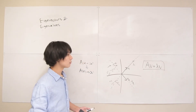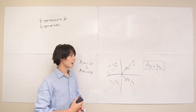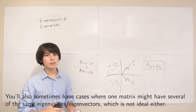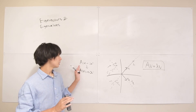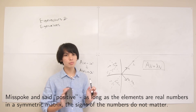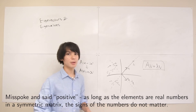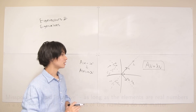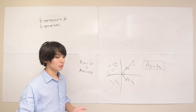Sometimes eigenvalues and eigenvectors aren't that clean — you might get eigenvalues that are not real numbers. But we're almost always going to be dealing with matrices A that are symmetric. When you have symmetric positive definite matrices A, you can guarantee that your eigenvalues are always going to be real numbers, and that the eigenvectors of a symmetric matrix are always orthogonal to each other. So we won't have to deal with any non-real numbers.